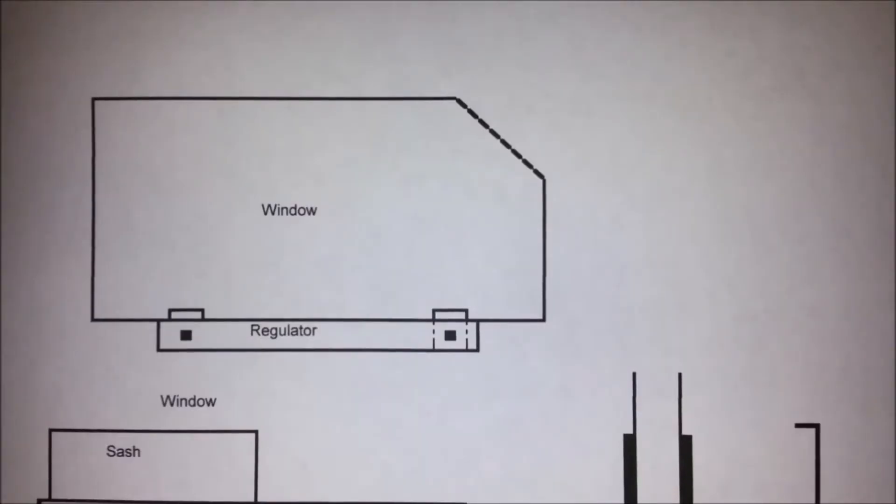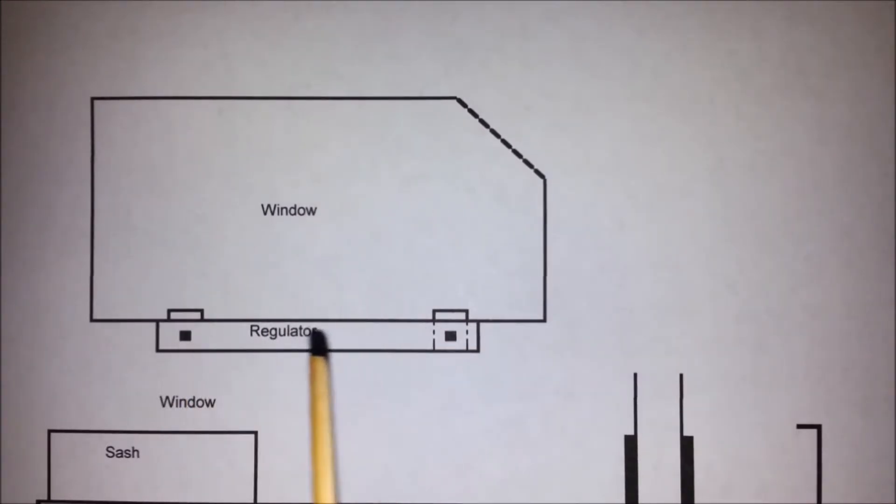I later realized that I didn't really show enough for some people to follow what I'm doing in the video. So I made these crude drawings to show you the parts that I didn't video very well. This is the window. This is the regulator bar. And the front sash is okay, but the rear sash is the one that's broken.